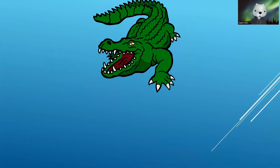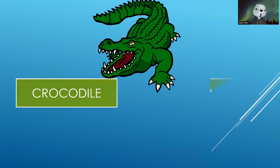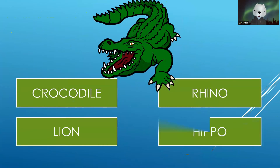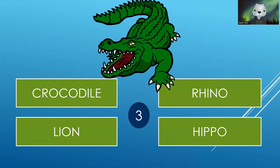Now you have to identify this animal. Your options are Crocodile, Rhino, Lion and Hippo. Your time starts now. The correct answer is Crocodile.